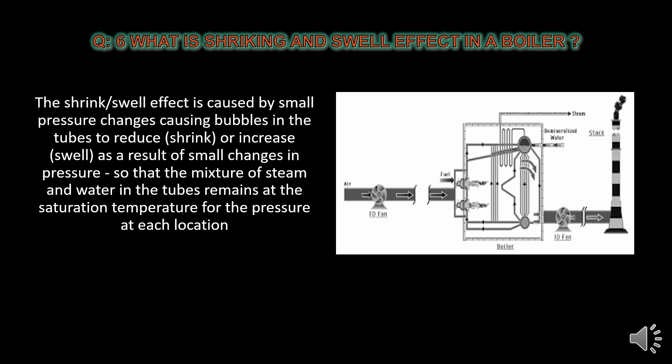What is the shrinking and swelling effect in a boiler? The shrinking and swelling effect is caused by small pressure changes causing bubbles in tubes to reduce (shrink) or increase (swell) as a result of small changes in pressure, so that the mixture of steam and water in the tubes remains at the saturation temperature for the pressure at each location.